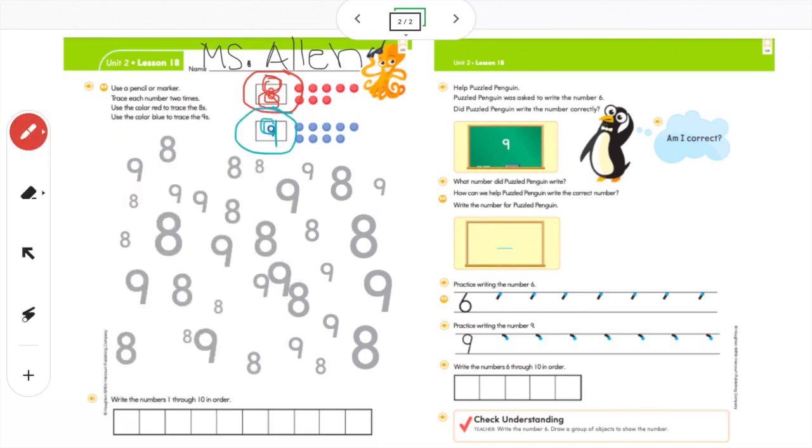I'm going to switch back to my red crayon and I'm going to very carefully trace all of these eights with my red crayon. I'm going to start here. I'm going to go around and down and curve back up. Around and down and curve back up. Notice I'm not just making two circles. I'm making an S. I'm curving it all the way back up.